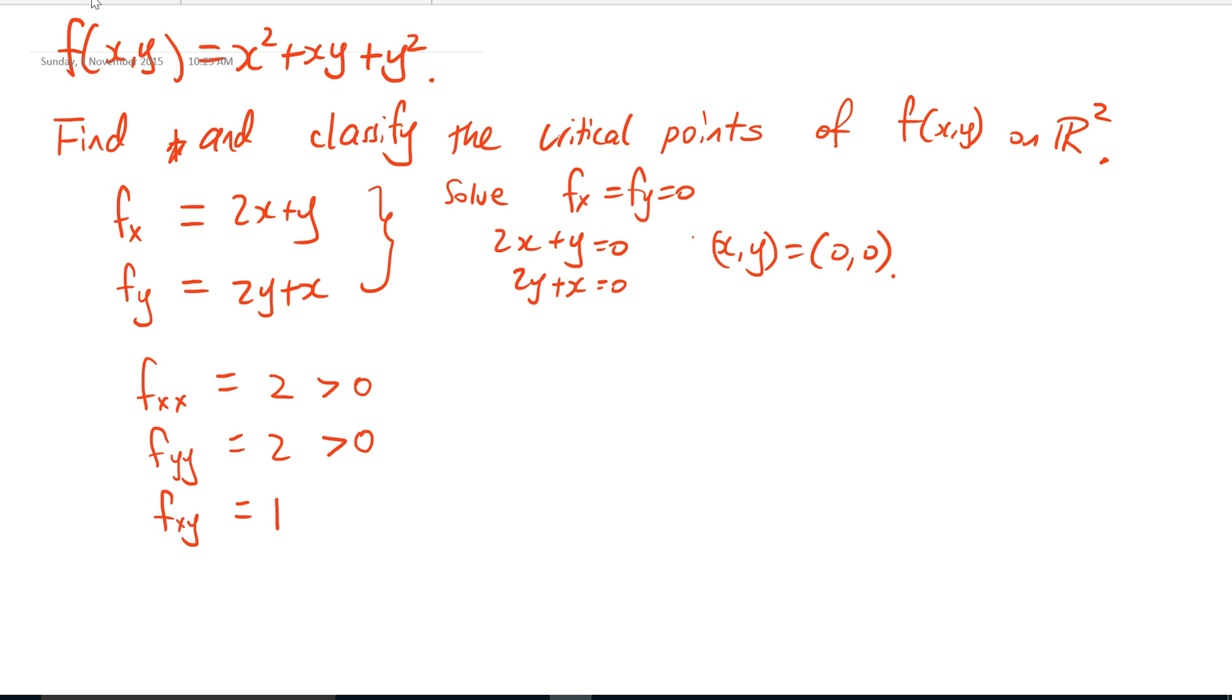We use the determinant test to test whether it's a saddle or not. The determinant D = fₓₓ·fᵧᵧ - fₓᵧ², which in this case is 2·2 - 1² = 3, which is bigger than 0, so it's not a saddle.